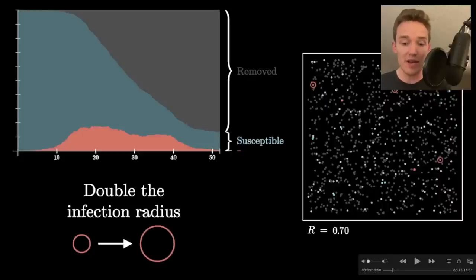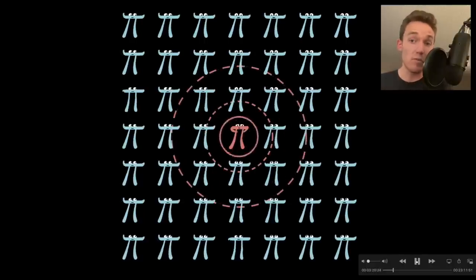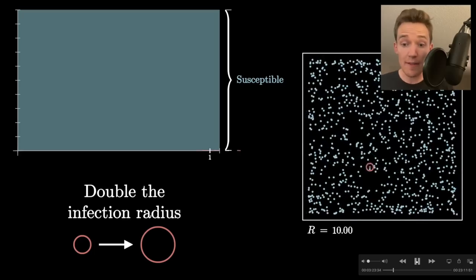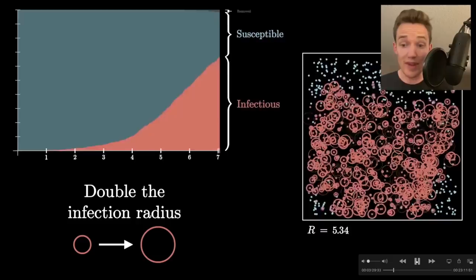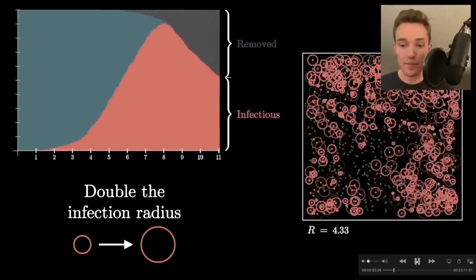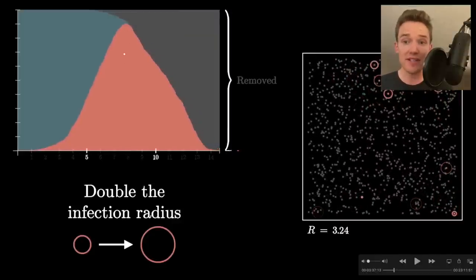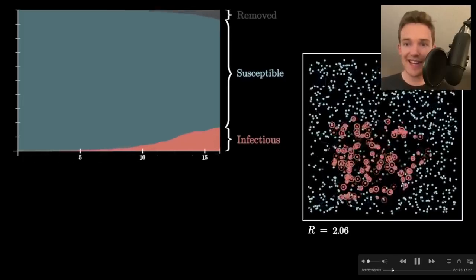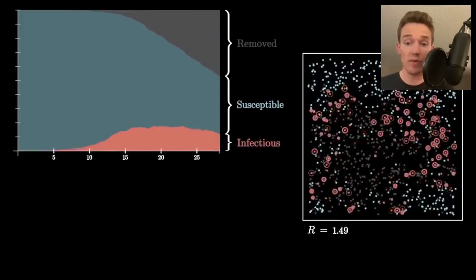For example, if I take this model and double the radius of infection — our proxy for how infectious a disease is — rather than infecting immediate neighbors you infect more people around you. Let's look at what happens to the spread of our toy epidemic. It's quite the conflagration. For this box with around a thousand dots, we end up with a moment when almost everybody is infectious at once. Even in this tiny society, there's a lesson in just how different the shape of that curve is compared to the default state before we doubled the infection radius.